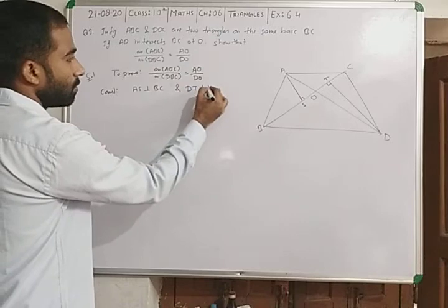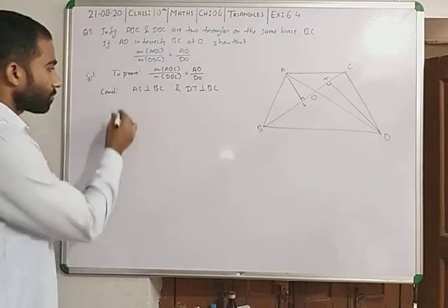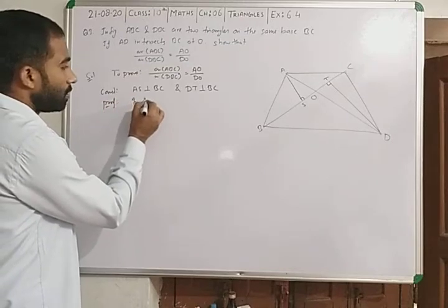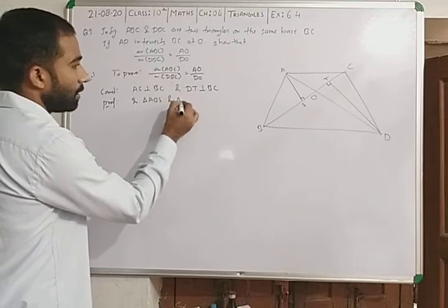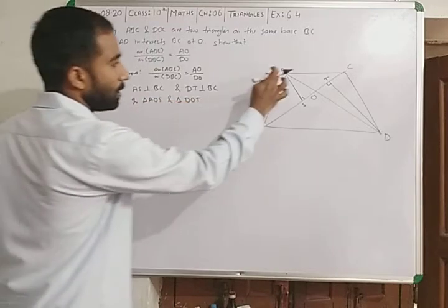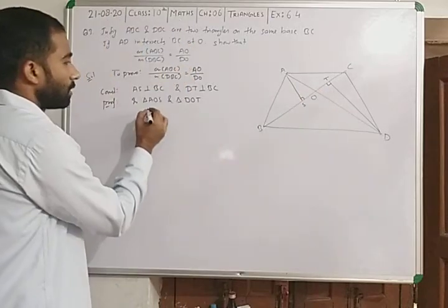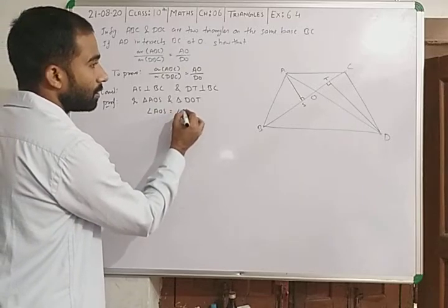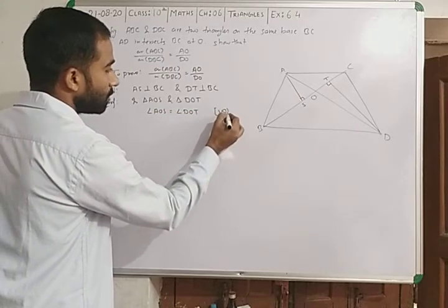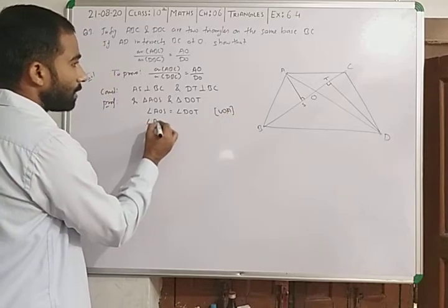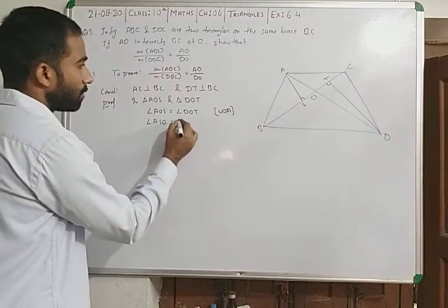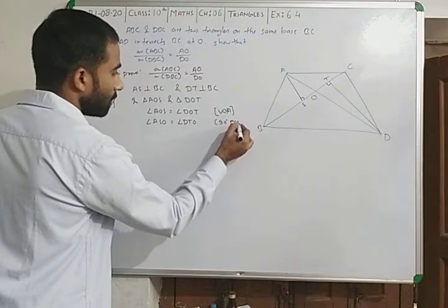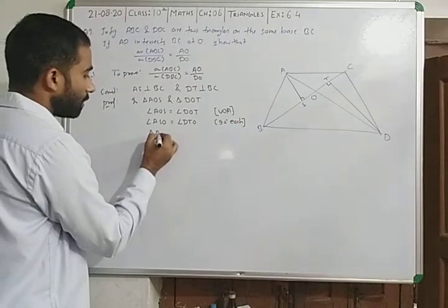Construction: AS is perpendicular on BC and as well as DT is perpendicular on BC. Now proof: in triangle AOS and triangle DOT, angle AOS is equal to angle DOT, vertically opposite angles. Angle ASO is equal to angle DTO, 90 degrees.